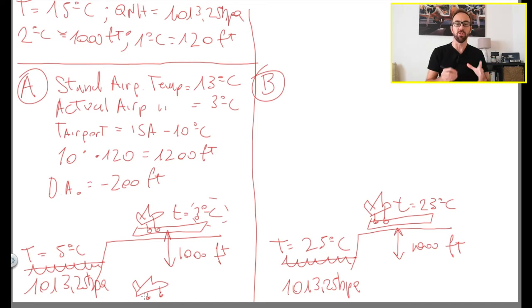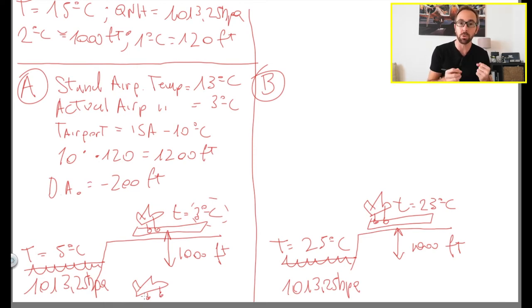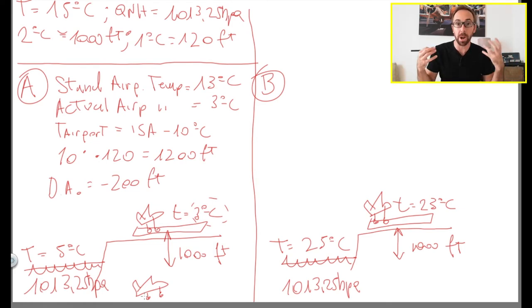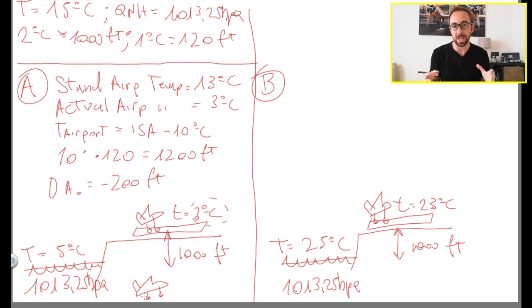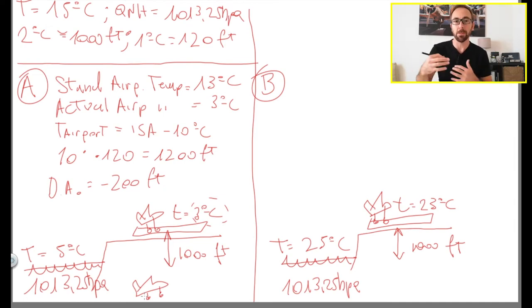Of course this is all theory, but this gives you an example of how aircraft performance will actually behave. The aircraft will have very good performance since it feels it has a lot more air than at its actual position — the engines will produce more thrust and the wings will produce more lift. So you will need a shorter takeoff runway distance and you'll be able to load more weight for the same runway.